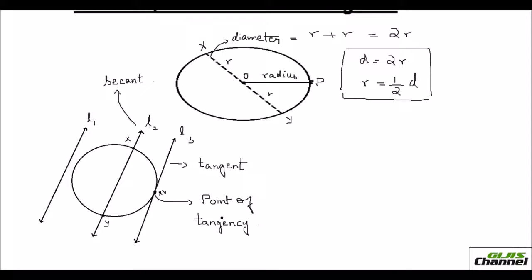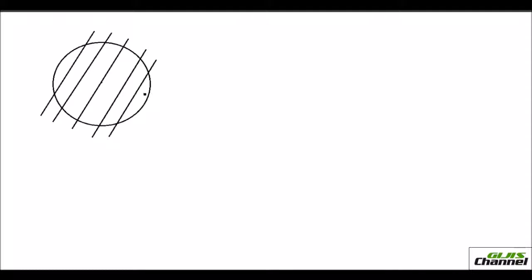In this chapter on circles, we are mainly going to deal with tangents and secants and their theorems. So you should first know what a tangent and secant means. I have drawn a circle with several secants — all are secants because each touches the circle at two different points. I name them S1, S2, S3, S4, and S5.